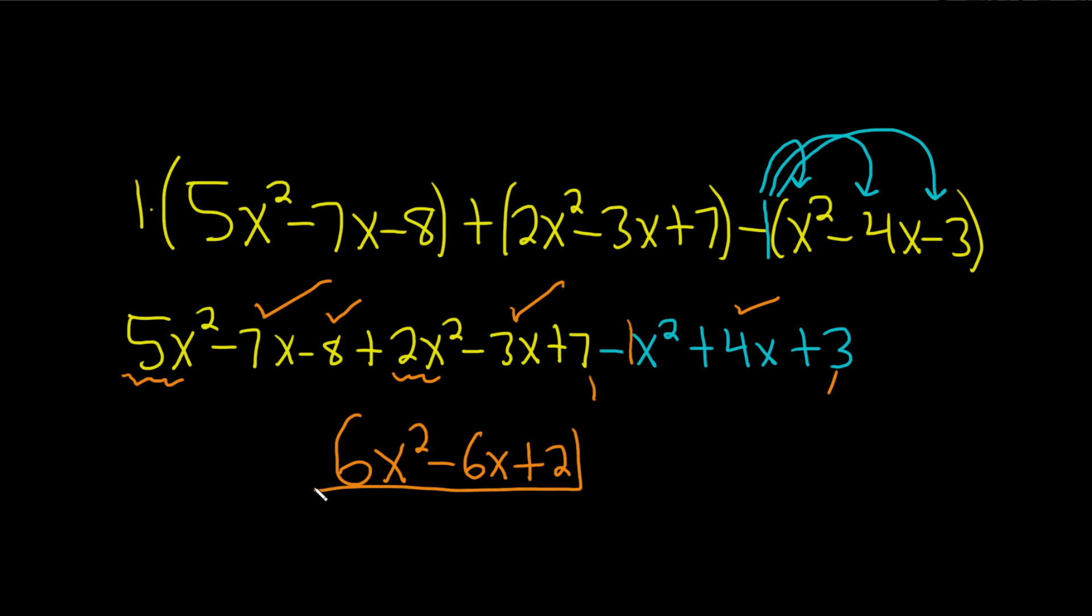And so that would be the final answer. You'll notice that the exponents go from biggest to smallest so it's in what's called standard form. The degree is the biggest exponent, so in this case the biggest exponent is 2, so the degree is 2.